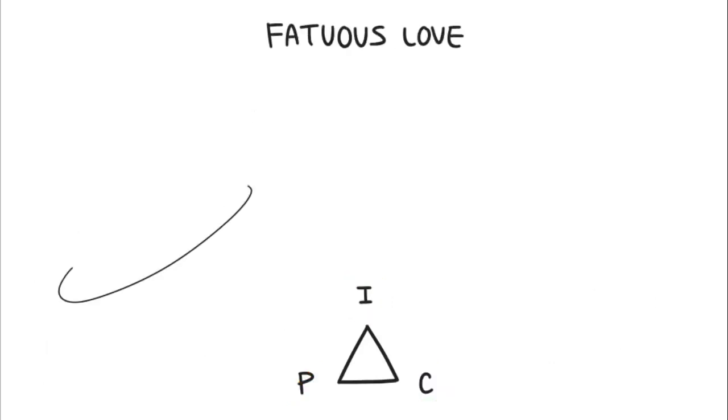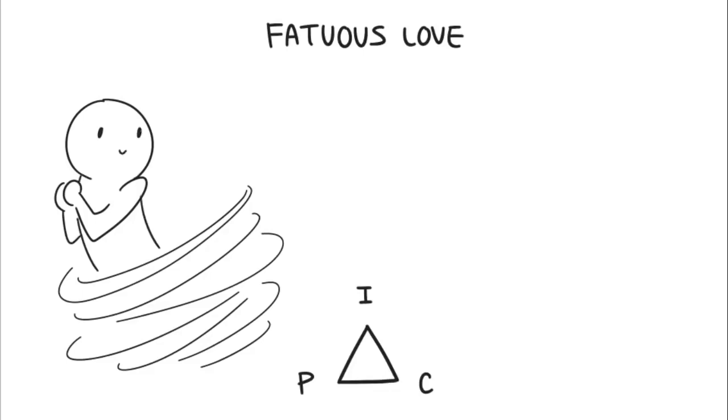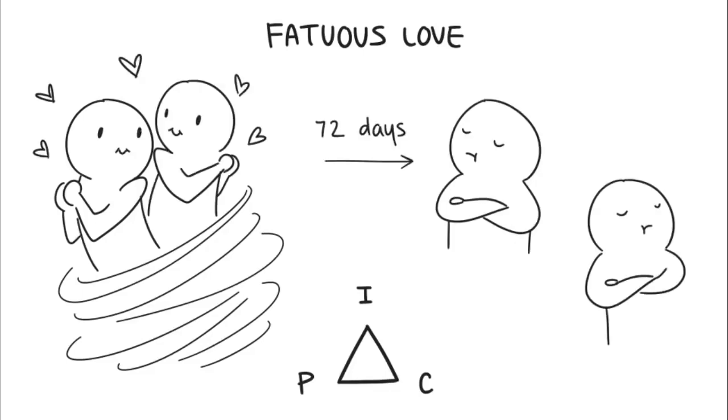Seven: Fatuous love. A good example of a fatuous love is when Kim Kardashian married Chris Humphries, only to divorce him 72 days later. It's a whirlwind of romance we usually see on television. Fatuous love is the combination of commitment and passion without intimacy.